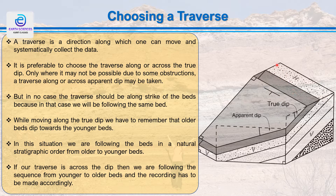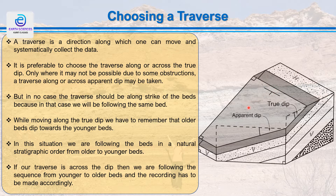But in no case should the traverse be taken along the strike line. Because along the strike line, we are going to get information of only one bed — in the strike direction, even dipping beds appear to be horizontal. When following the true dip direction, we follow the beds in natural stratigraphic order from younger to older. If taken across, we get older beds across the direction.